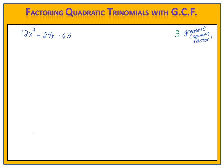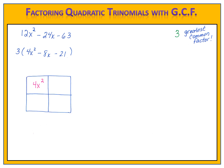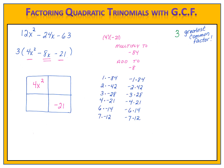From here, factor out the greatest common factor of 3, which leaves 4x squared minus 8x minus 21 in the parentheses. Draw the grid with 4x squared in the upper left box and minus 21 in the lower right box. We take 4 times negative 21, which is negative 84 — we need numbers that multiply to negative 84 and add to negative 8. Listing the pairs, we find 6 and negative 14. So we place 6x and negative 14x in the remaining boxes.